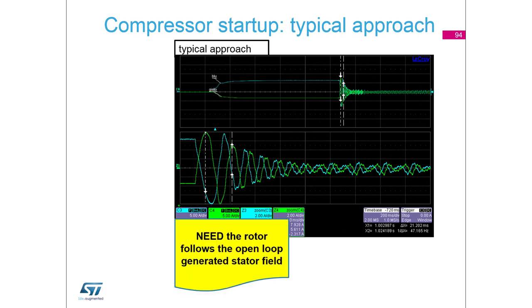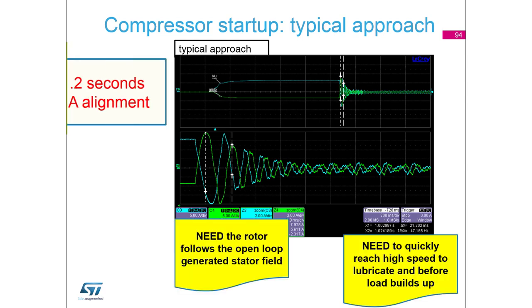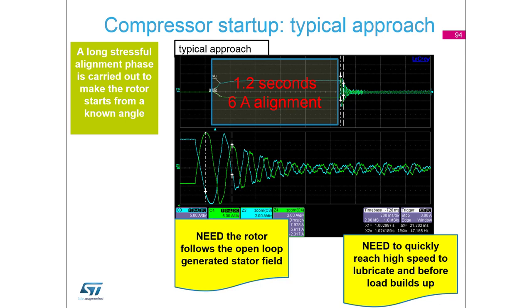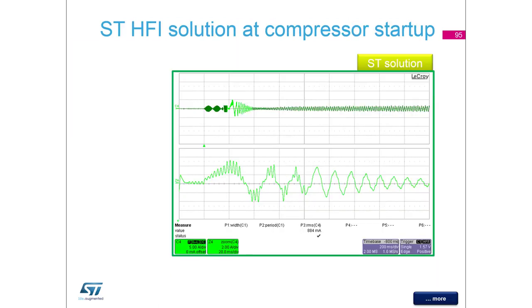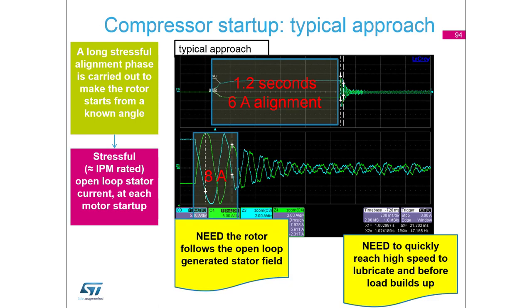Looking inside: the first part is alignment - more than one second with six amperes, which is quite a high current. Then we have eight amperes for a very short open-loop startup. Then it switches to closed loop, and it could be the same with HFI.